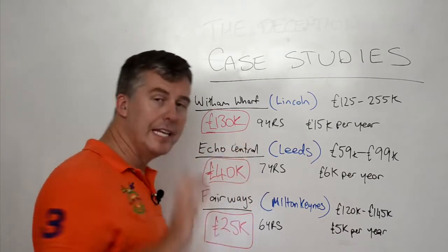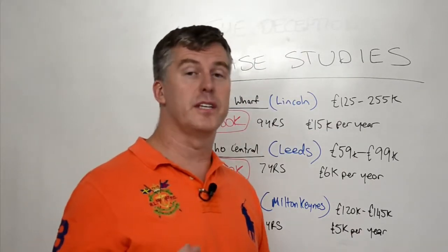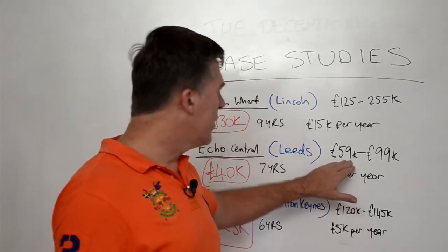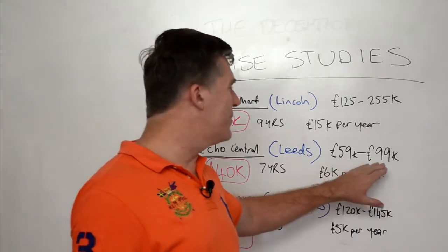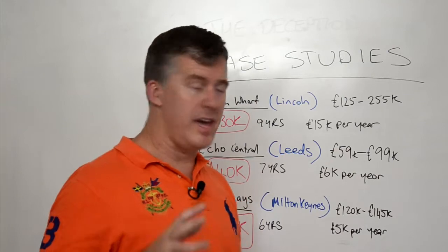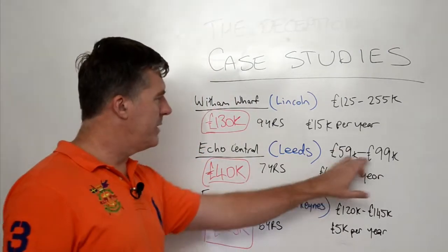Now, let's look at Eco Central in Leeds. Leeds dropped considerably. Prices about 30% drop. So we got in after that happened and got these for about £59 grand. And at the time, at the height, they were worth about somewhere between £99 and probably about £120,000.